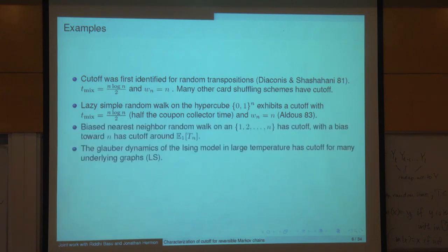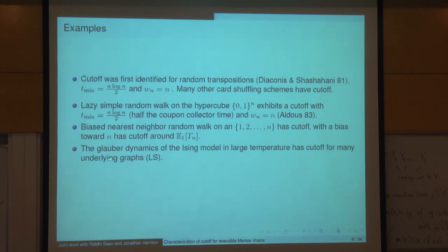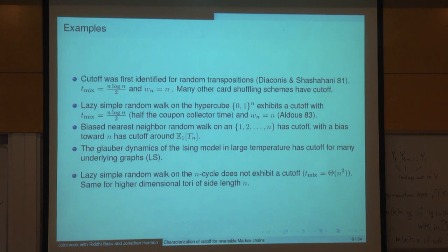Those are the classical examples. There's been a lot of progress on Glauber dynamics for the Ising model. I conjectured some time ago that in high temperature this always has cutoff, and this was proved in the lattice in a remarkable series of papers by Lubetzky and Sly. Just to see: there are examples without cutoff.